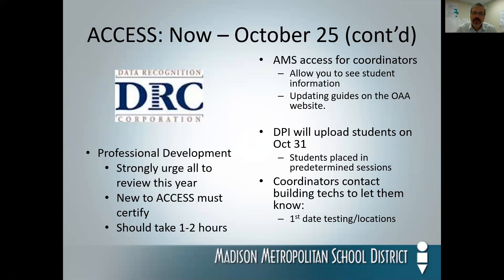You will have, as the coordinator for Access, access to the AMS software, and we'll be getting that to you in the next couple of weeks. As of October 31st, DPI will be uploading the students who are already in IC. You should be double-checking to make sure every student is there and that all the information is correct. They will be placed in predetermined sessions. You should also be contacting your building coordinator tech support, informing them when you're going to give the first test and what locations so they can be on site to ensure smooth implementation on the first day of testing.